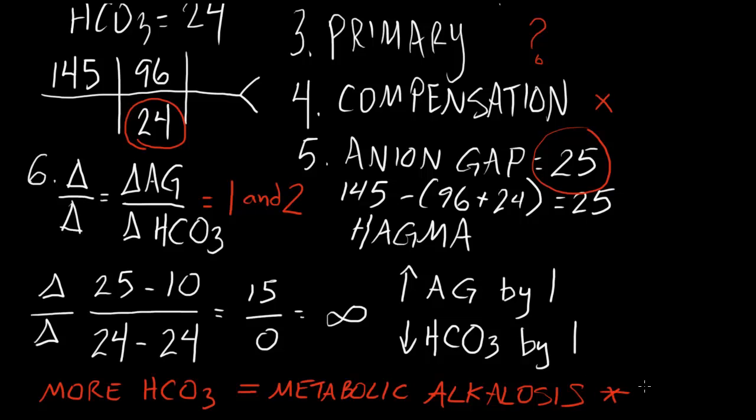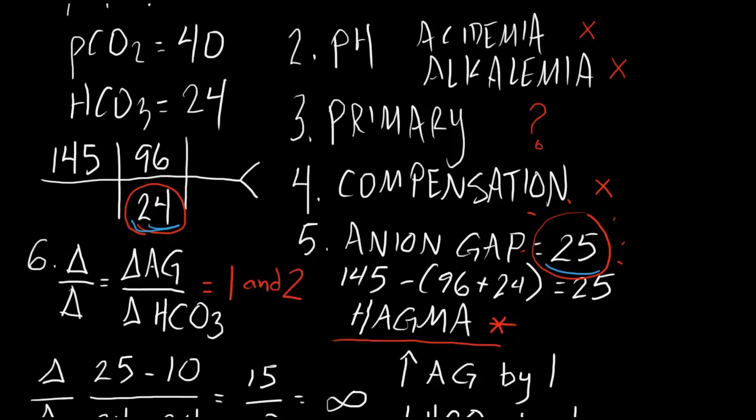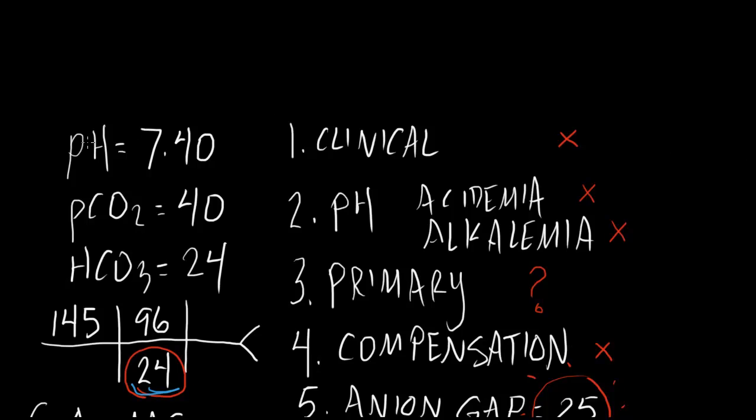Okay? So in this particular case, we have a high anion gap metabolic acidosis. How do we know that? The anion gap is above 20. We have a metabolic alkalosis. How do we know that? Because of our delta-delta arrangement tells us that this bicarb, this bicarb of 24 is much, much higher than it should be with an anion gap of 25. And so this particular patient, who has, going back to the top, a pH of 7.4, a pCO2 of 40, and a bicarb of 24, actually has a high anion gap metabolic acidosis.